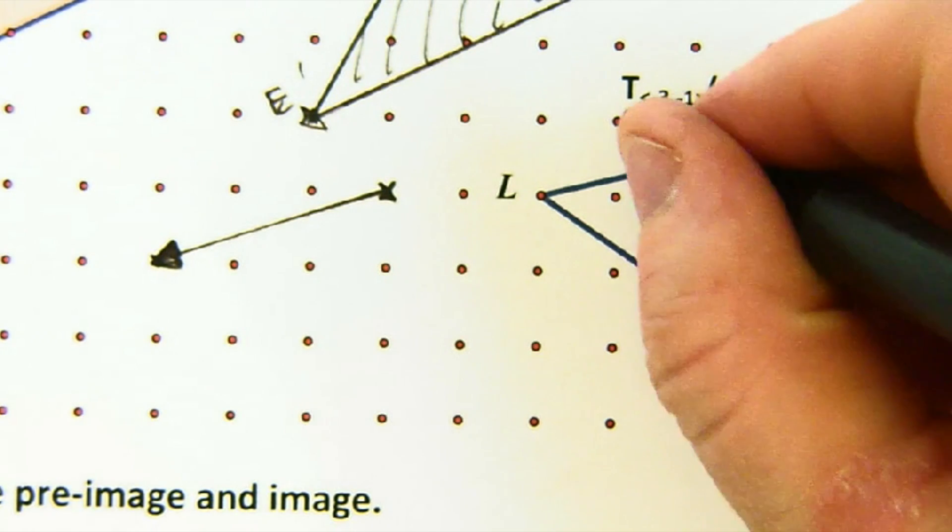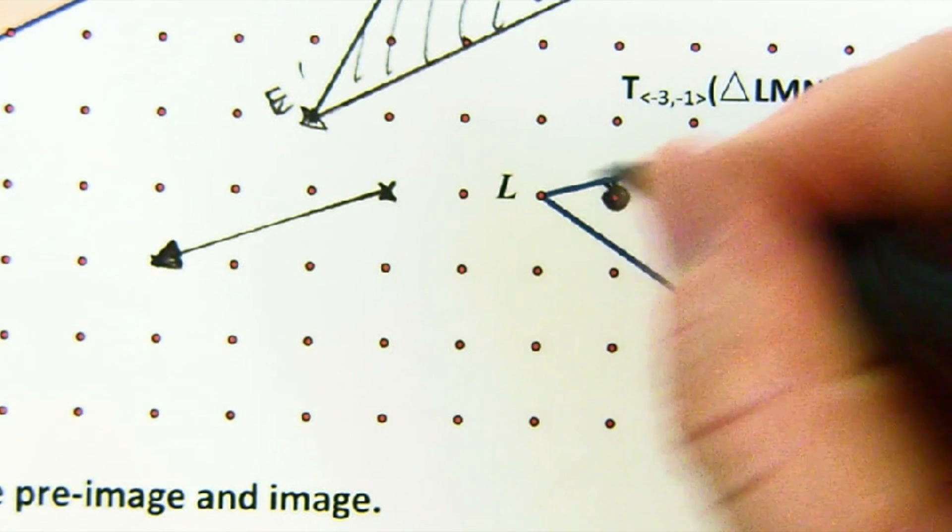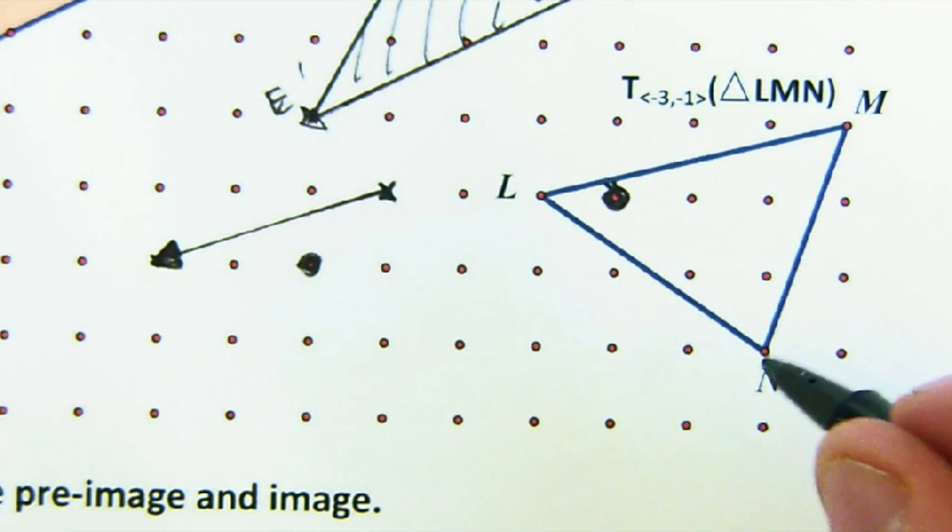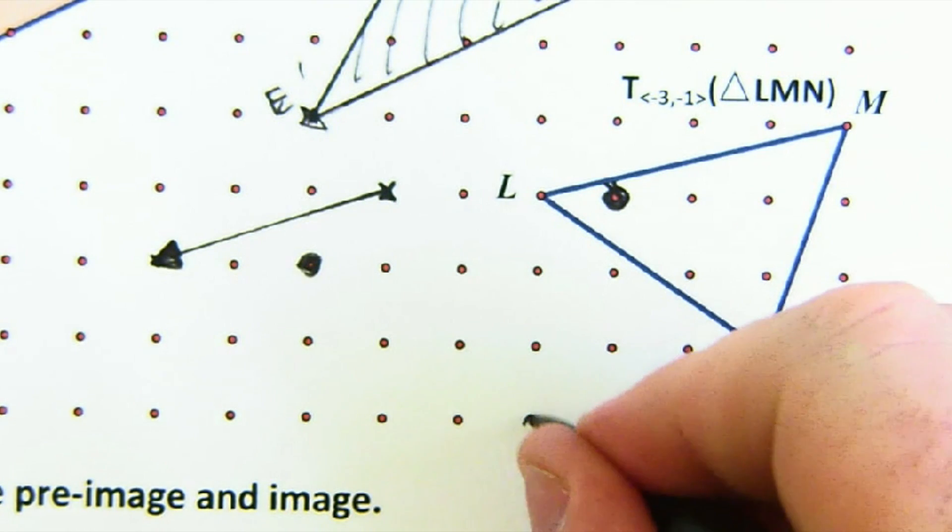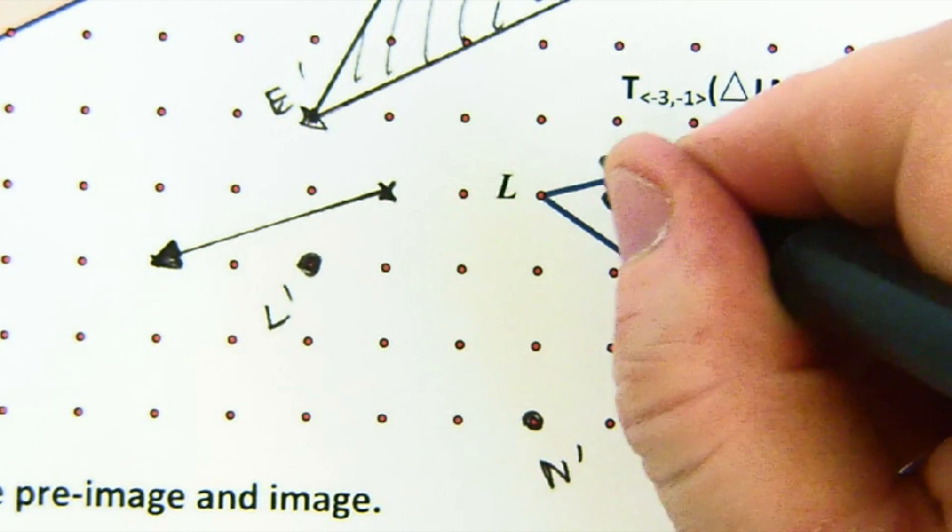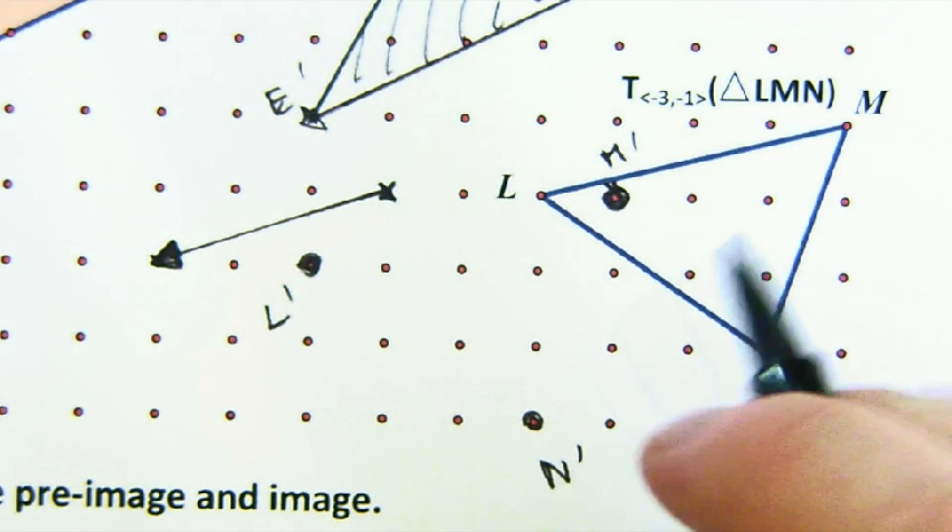So again, 1, 2, 3, n would land here, 1, 2, 3, down 1, l would land there, l prime, 1, 2, 3, down 1. This would be n prime, l prime, n prime. Well, I ended up doing it anyways.